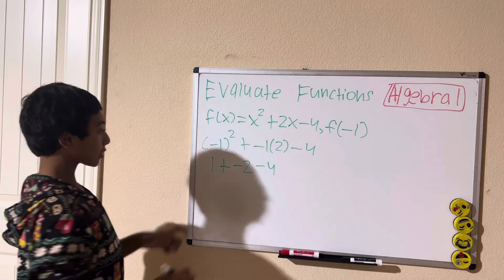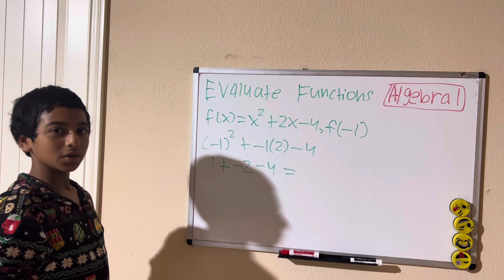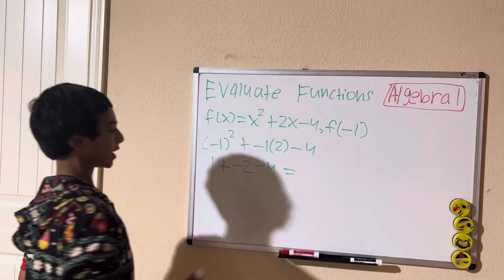Now we're going to simplify. 1 plus negative 2 is negative 1, and negative 1 minus 4 is negative 5.